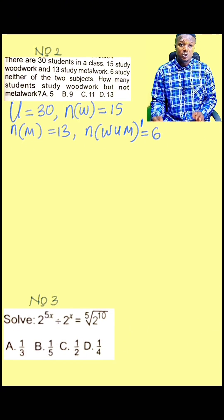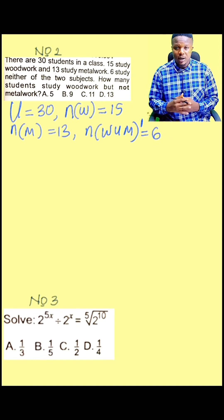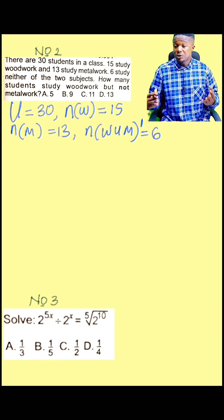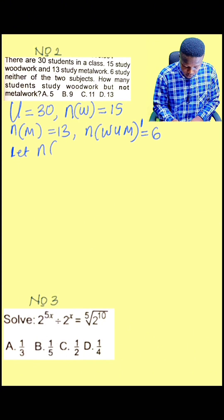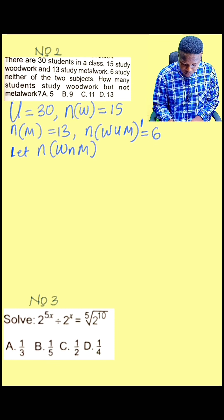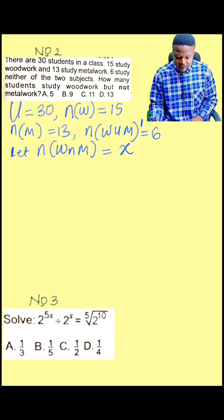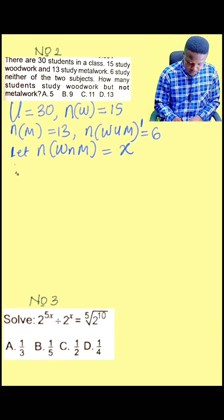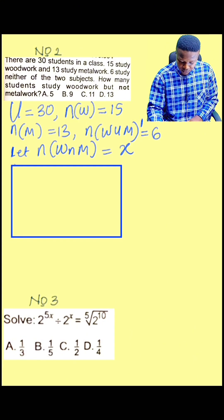Also, do you know that some students can offer both metal work and woodwork at the same time? These number of students, we don't know their number. The question did not tell us. So we can say let the number of people that like woodwork and metal work be equal to X. Let us represent this information in a Venn diagram.